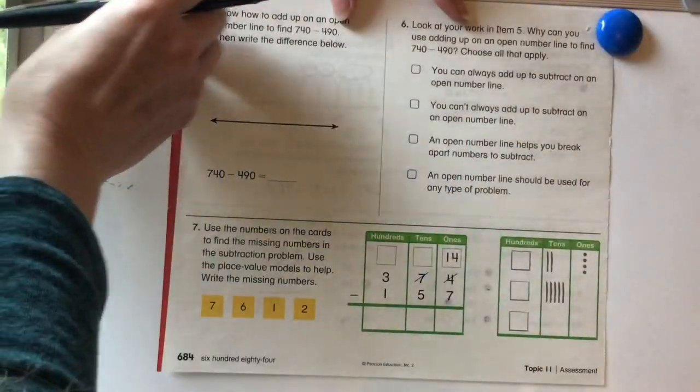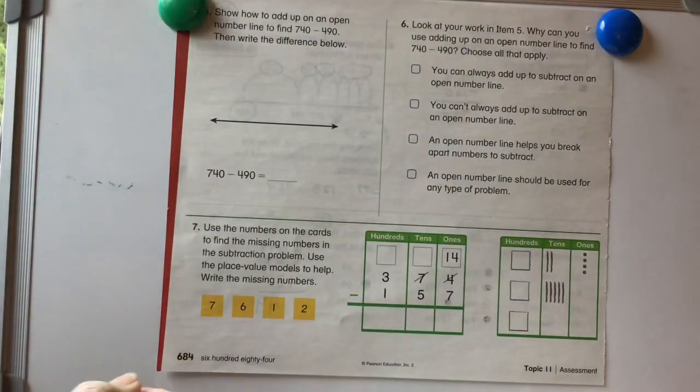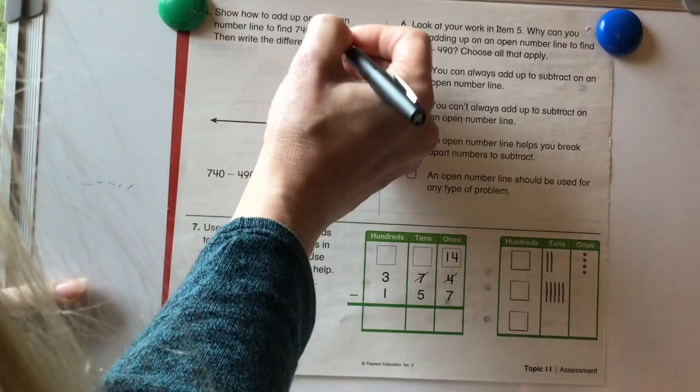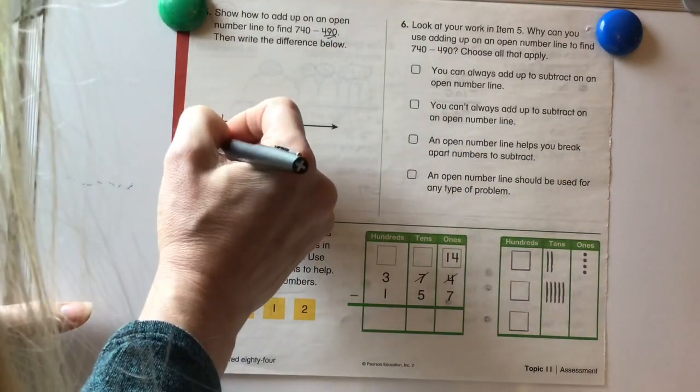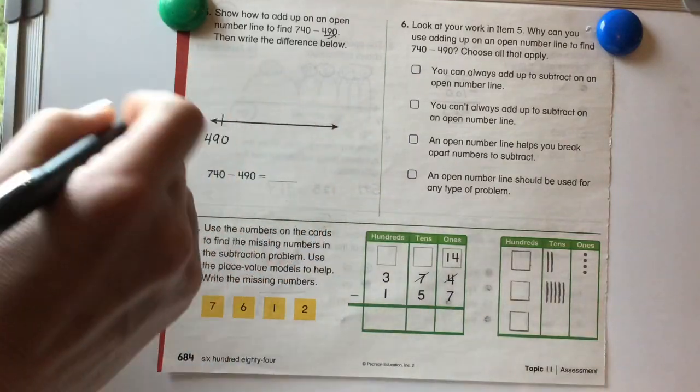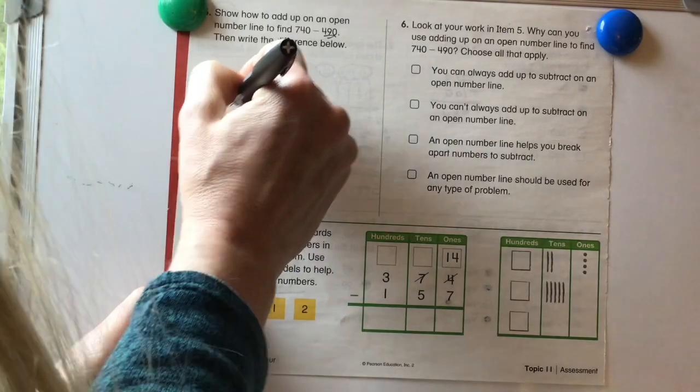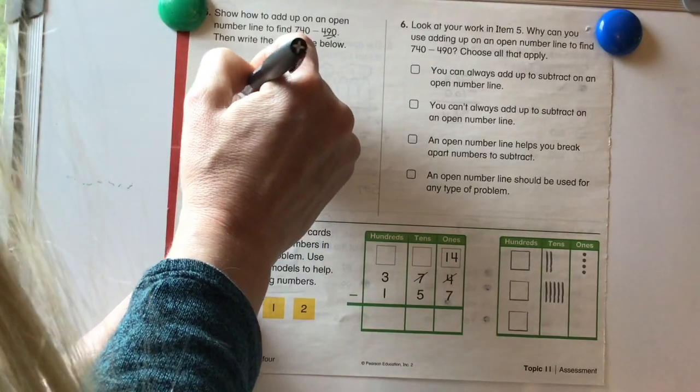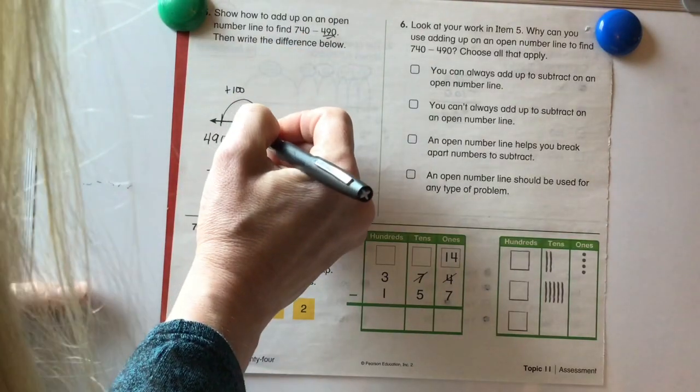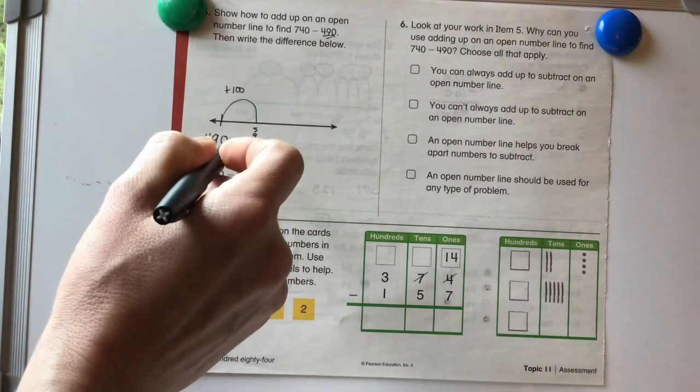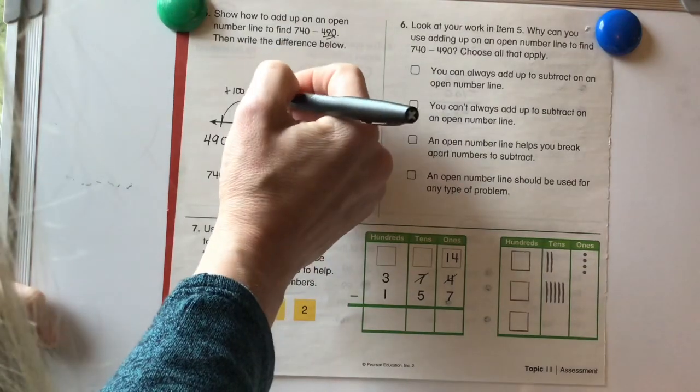Okay, let's take a look at the back here. Show how to add up on an open number line to find 740 minus 490. So we're going to add up. We're going to start at 490 and we need to add up to 740. So let's do some hops by 100 first. Plus 100 will get us to 590. We can still go up. Let's see. We can go up to 690. Yep. Let's add another 100.